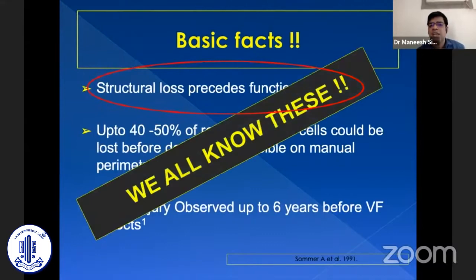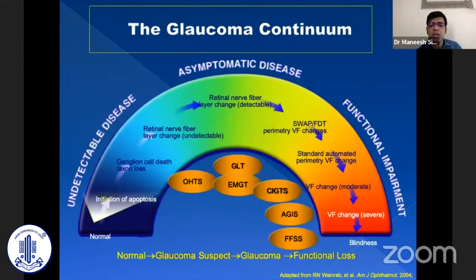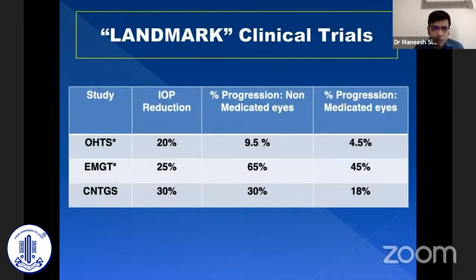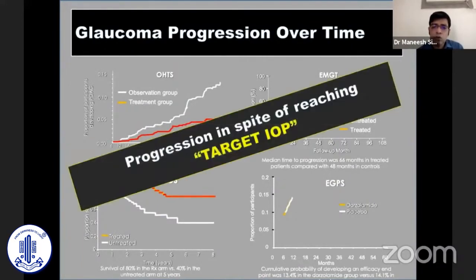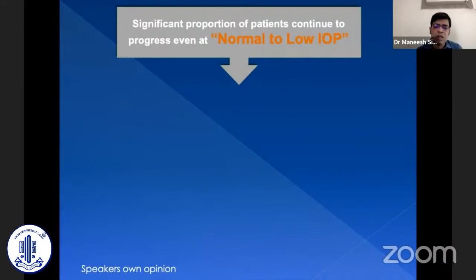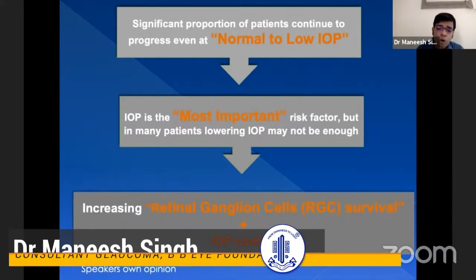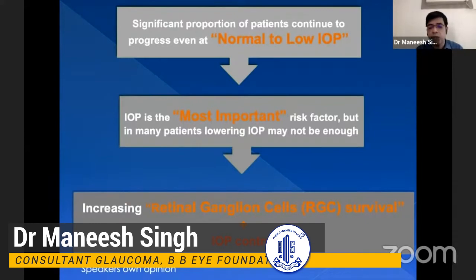This brings us to the important topic: glaucoma management beyond IOP. We know it takes 40 to 50 percent of retinal ganglion cells to die before visible changes appear on perimetry. IOP reduction is the most important way to control progression. But landmark trials — the Ocular Hypertension Treatment Study, EMGT, and CNGTS — have shown that a group of patients continues to progress despite reaching target IOP. So if we can control IOP plus increase retinal ganglion cell survival through neuroprotection or improving retinal vascularity, we may give better treatment than IOP control alone.